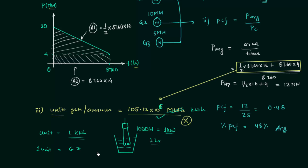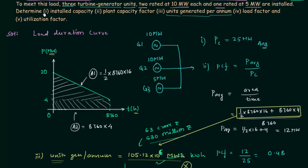To give a sense of scale: if one unit costs 6 rupees, this power station generates approximately 6300 million rupees worth of electricity. The fourth and fifth parts — calculation of load factor and utilization factor — are homework for you. Once you have your answers, post them in the comment section. See you in the next lecture.